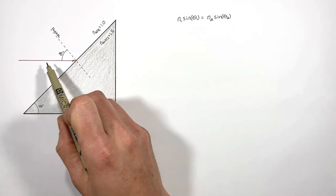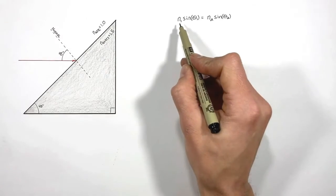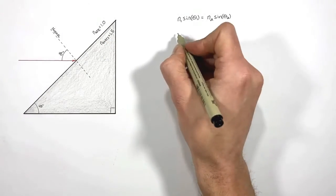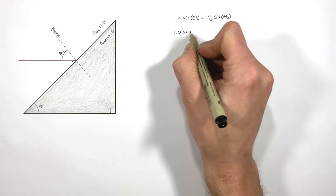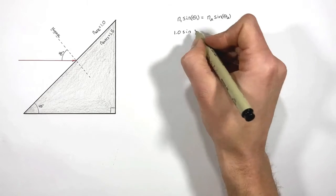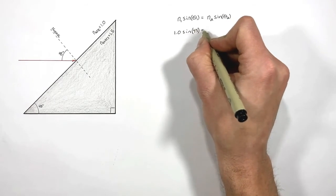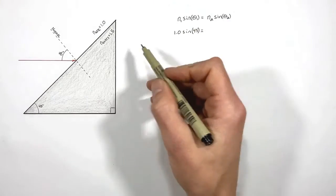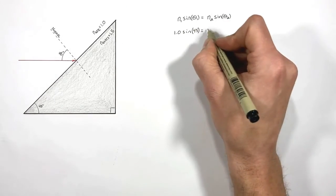So looking at our incident ray which is traveling through air, it has an index of refraction of 1, and an angle of incidence of 45 degrees. As the ray travels into glass, the index of refraction in glass is 1.5.